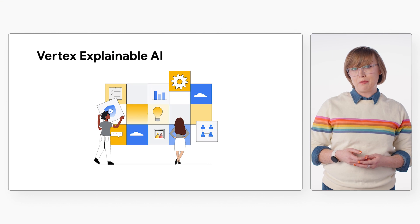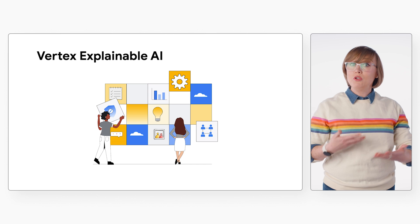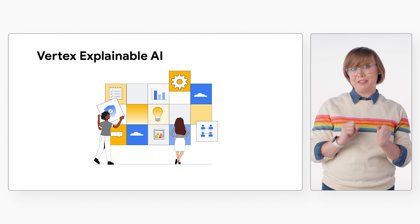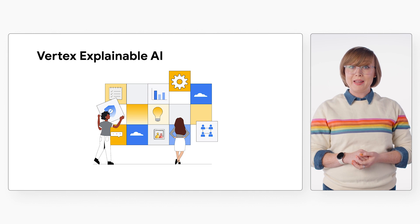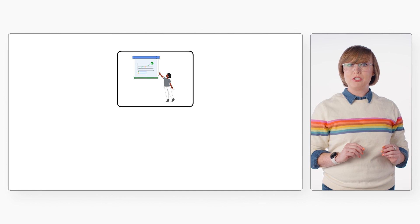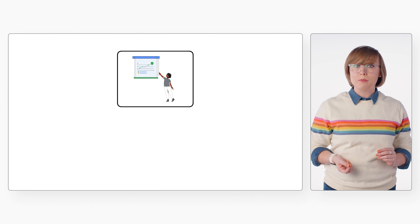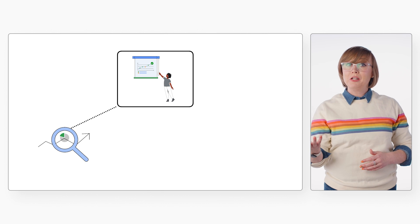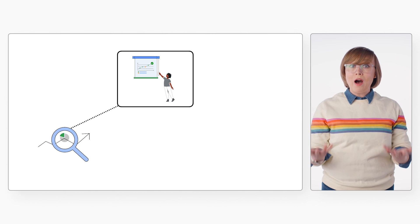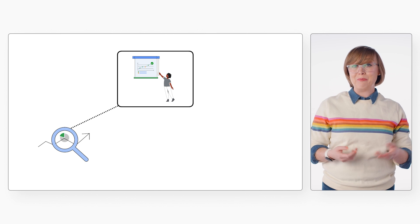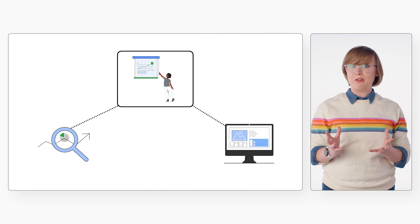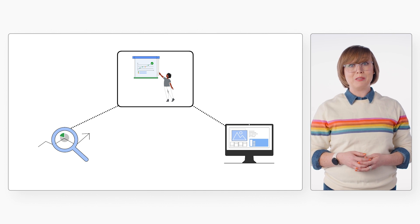Understanding how machine learning models make predictions and being able to communicate those insights to external stakeholders and other people within your organization is a key part of being able to properly evaluate and interpret your machine learning models. Having clear and accurate explanations for models can help several groups within your organization, be it your model builders, data scientists, and MLOps, who want to better understand why their model isn't performing or how to improve it. End users of machine learning systems are looking to see if they can trust the model or make decisions on how to respond to the prediction.